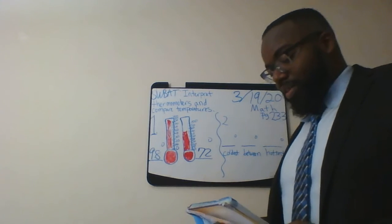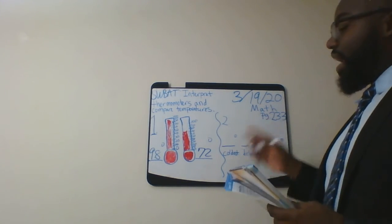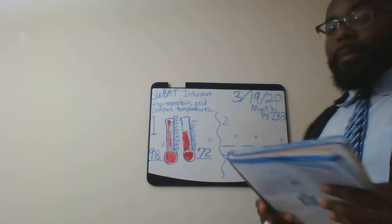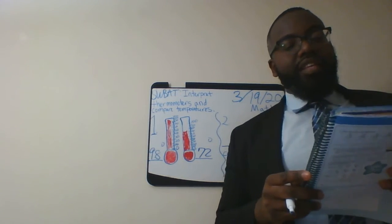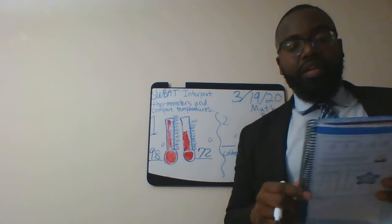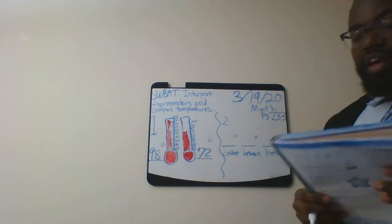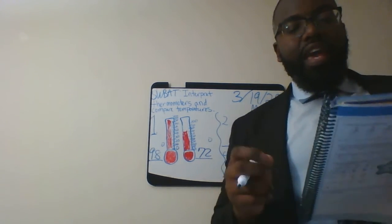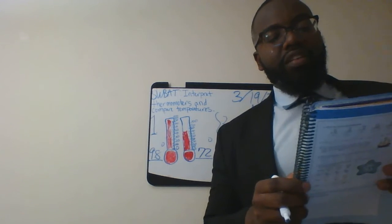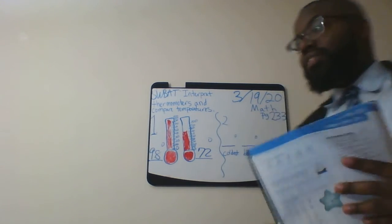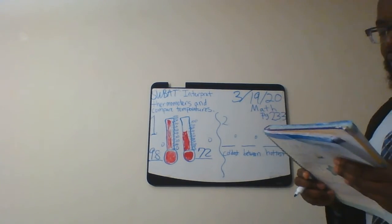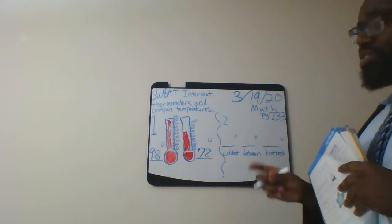All right, now let's look at number two. Number two says look at the temperatures in section one. Now the three I give us two, but also three temperatures in section one. Look at those temperatures and write the temperatures in order from coldest to hottest.